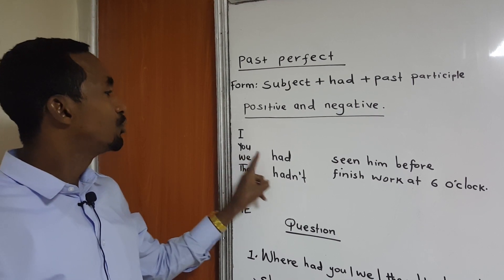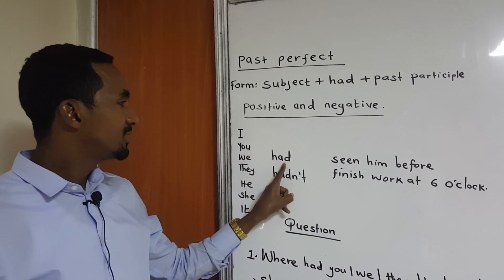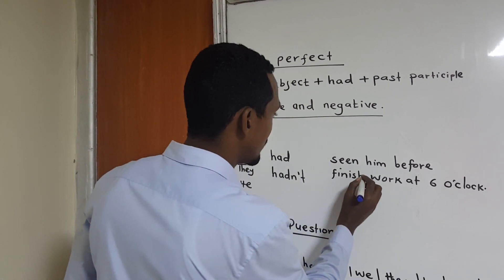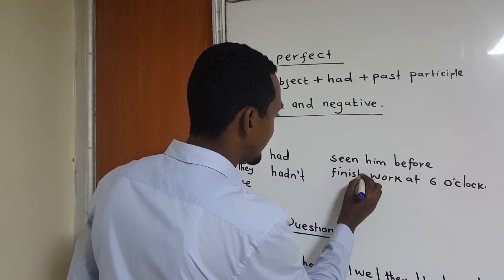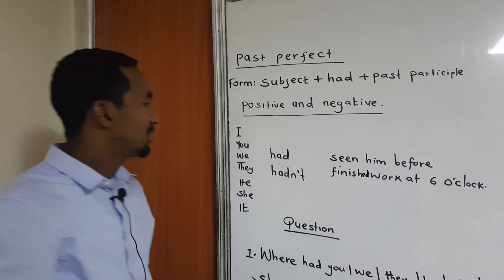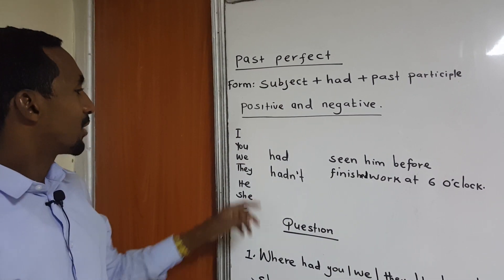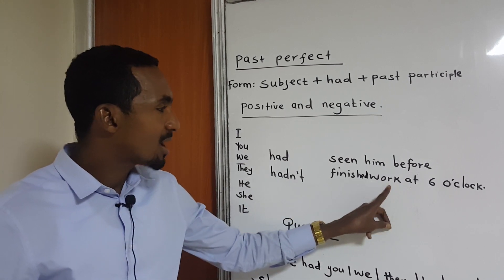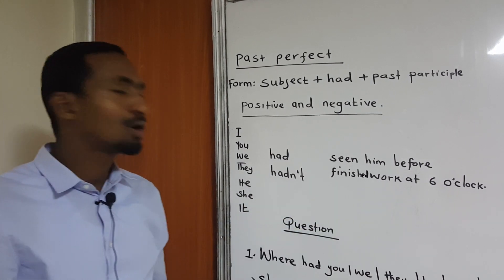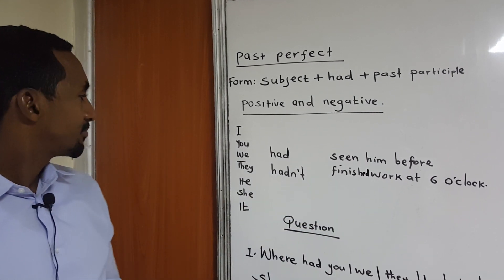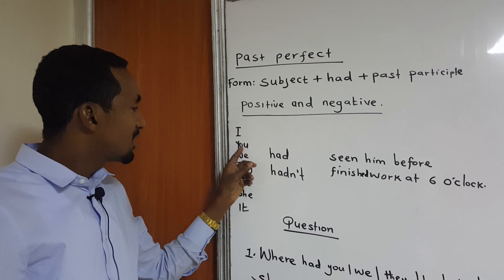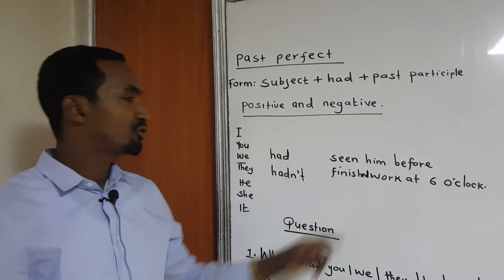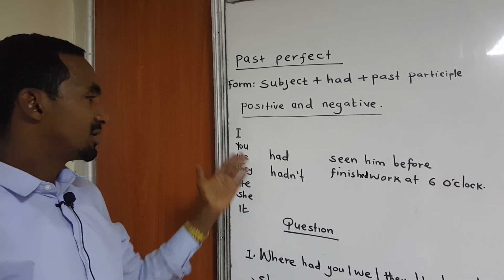We can also use other subject pronouns. You — you had, then this one, we add -ed. You had finished work at six o'clock. Then the negative: you hadn't finished work at six o'clock.